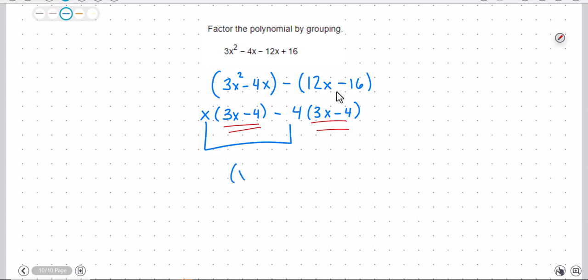So I bring these together, x minus 4, and then the 3x minus 4, and that is factoring by grouping.